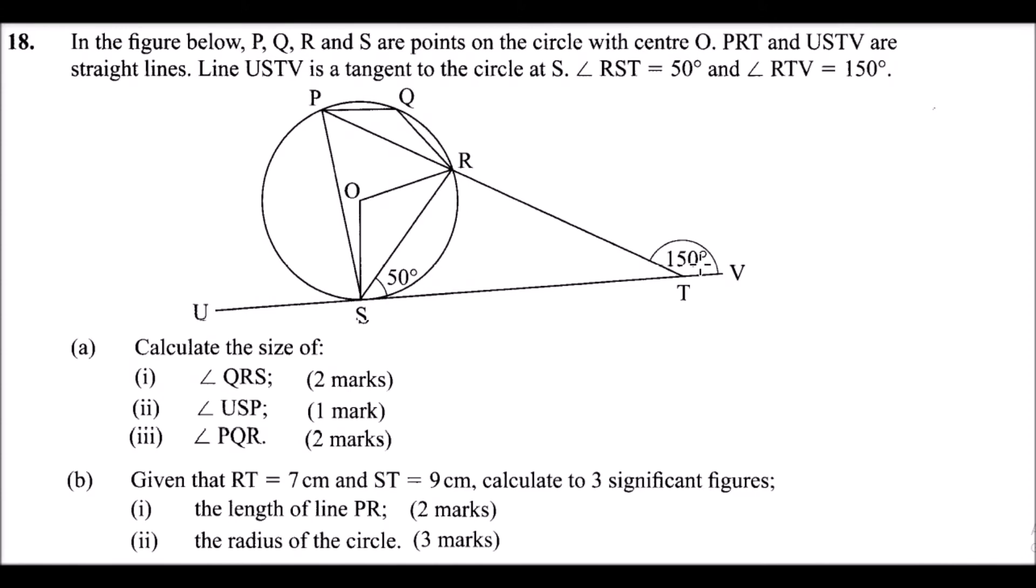So part A, calculate the size of angle QRS. To approach this, you need to fill the angles that you can identify using the properties of chords and circles, the topic in form 3. So here, because this angle is 180, you subtract 150 from 180, this angle is 30 degrees.